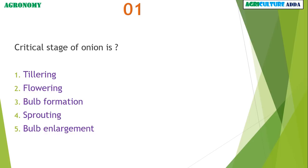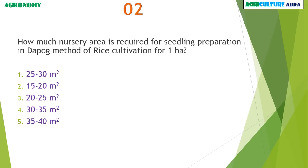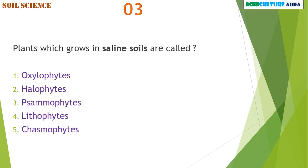Critical stage of onion is bulb formation. How much nursery area is required for seedling preparation in the debug method of rice cultivation for 1 hectare? 25 to 30 square meters. Plants which grow in saline soils are called halophytes.